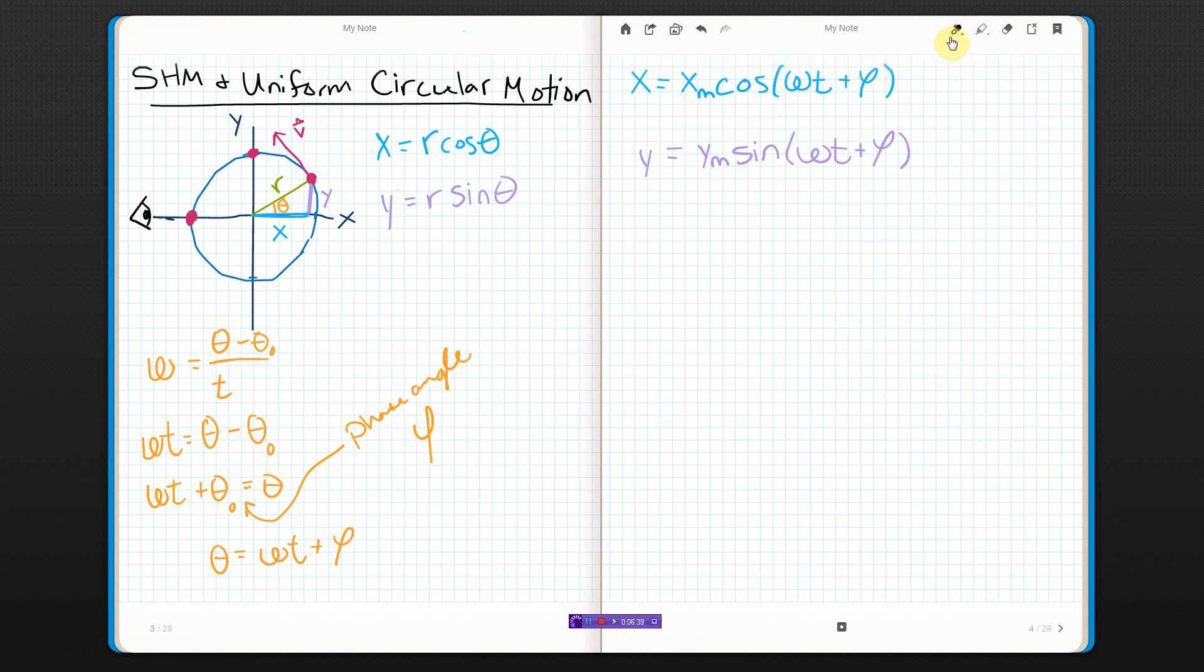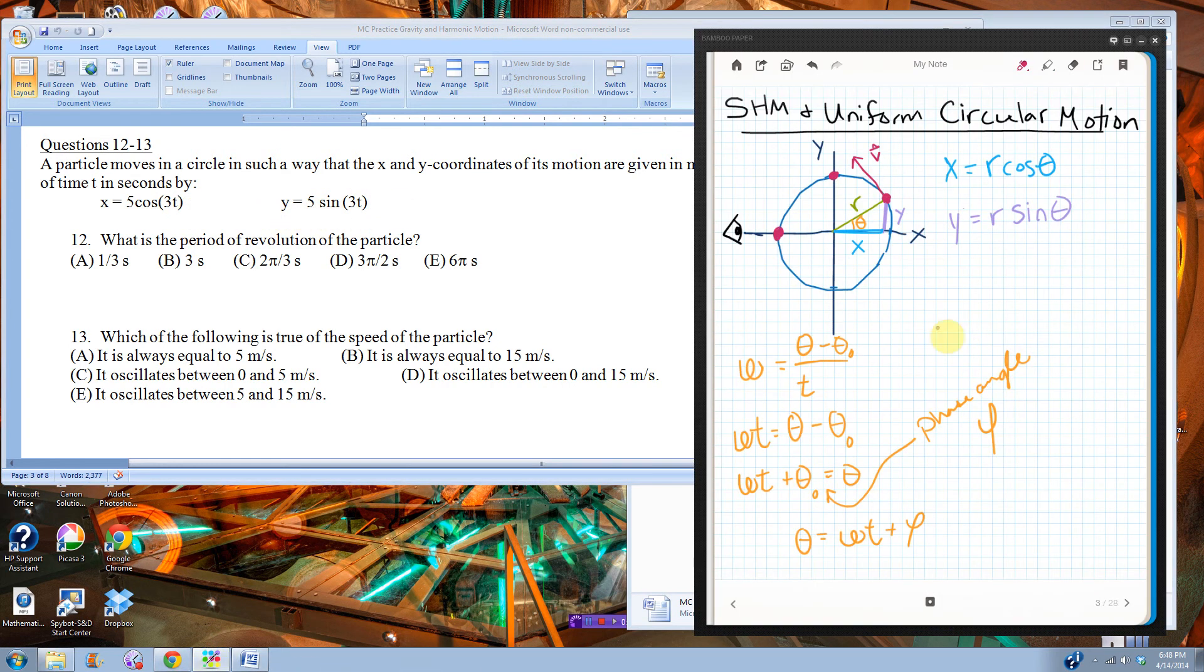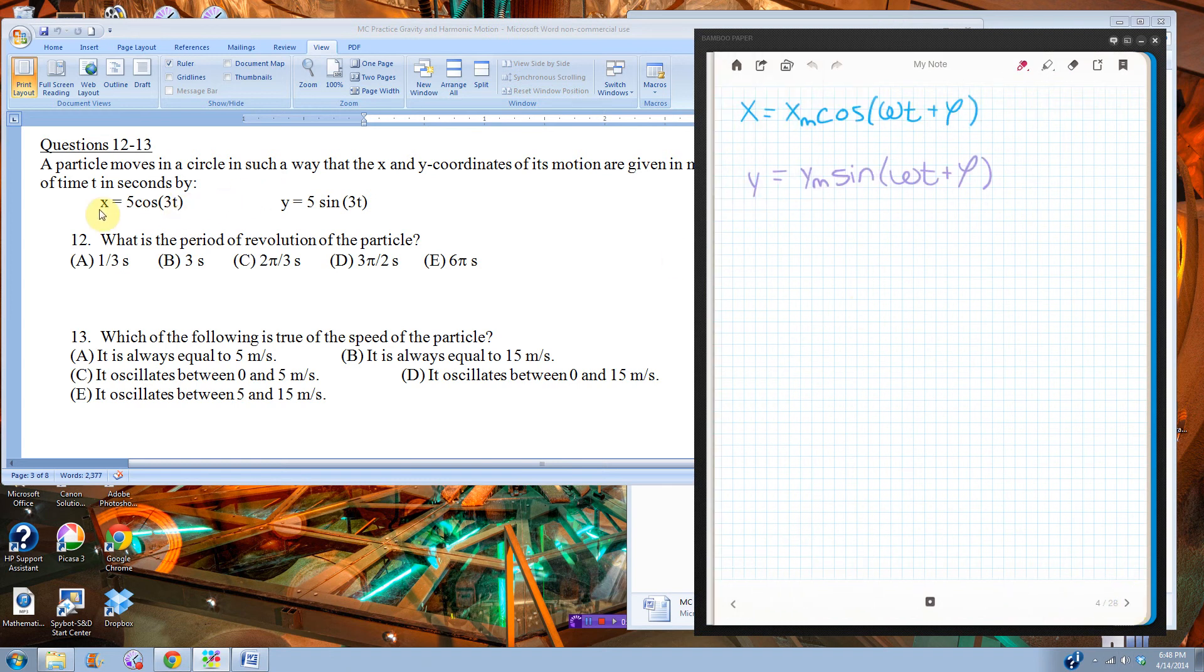So, I know that there was a multiple choice question where they said that a particle was moving in such a way that its X and Y could be shown as this. It says a particle moves in a circle in such a way that the X and Y coordinates of motion are given in meters as functions of time as this. So, we've got our X equals 5 cosine 3t and Y equals 5 sine 3t. So, what they're saying here is that if this is for something moving in a circle, then I can assume that that 5 right there is the amplitude. So, I'm saying that the radius of this circle, that's what I'm saying.